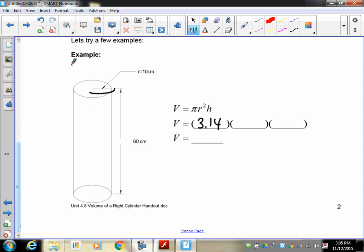Now the radius, go up here. Radius is halfway across the circle. That's 10. Now it's squared, so it's 10 squared. And of course our height is given to us as 60.